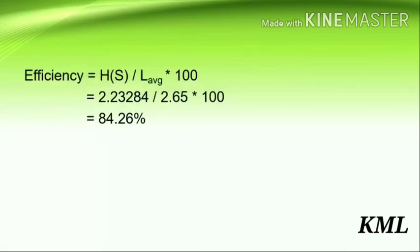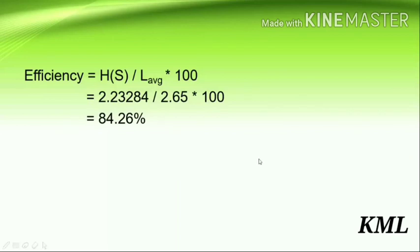Efficiency = H(S) / L_average × 100 = 2.23284 / 2.65 × 100 = 84.26%. That's it — this is how you solve the problem using Shannon coding. I hope you understood; if you have any doubts, ask in the comments below. Thank you for watching, keep learning.